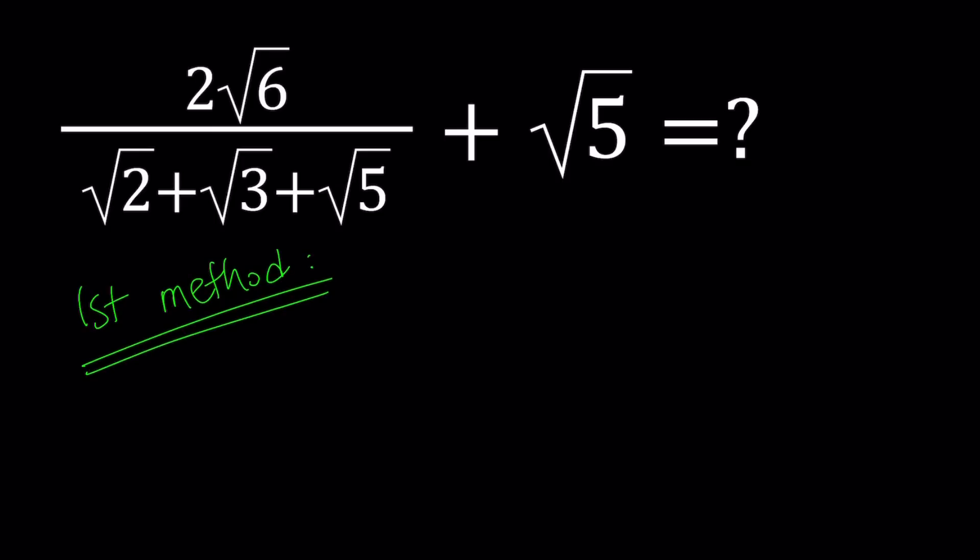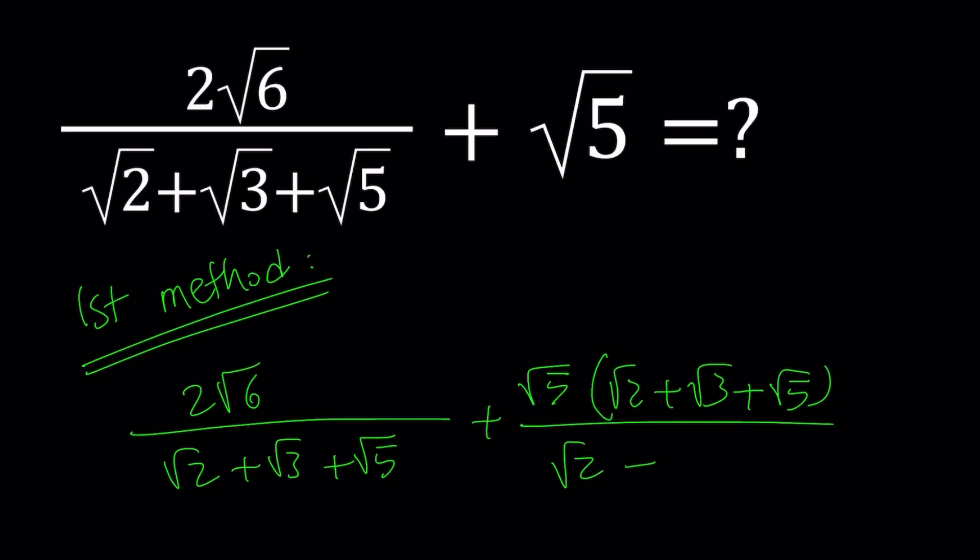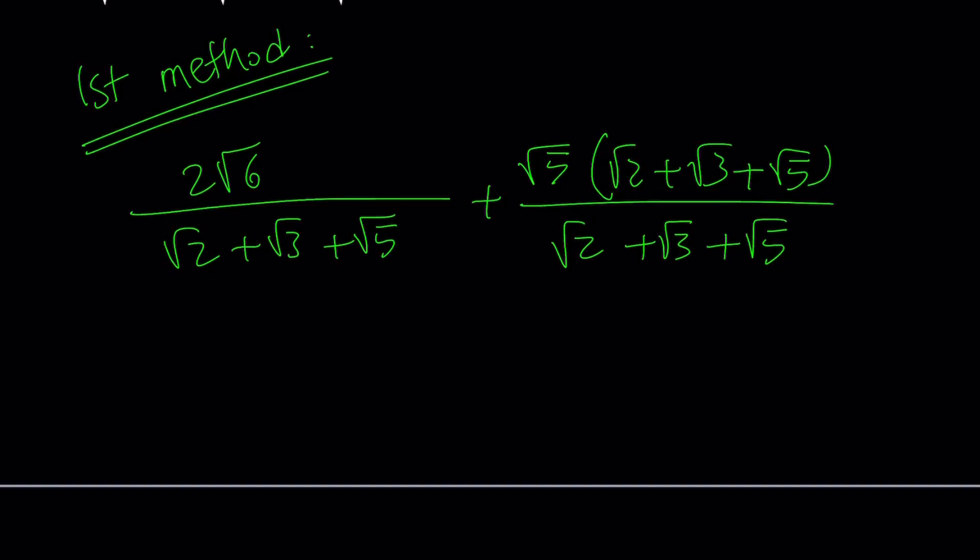So for my first method, I'm going to make a common denominator. So 2 root 6 divided by root 2 plus root 3 plus root 5, plus root 5 multiplied by the common denominator and divided by that. So now, since we have a common denominator, we can just go ahead and simplify and add the numerators.